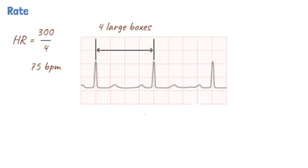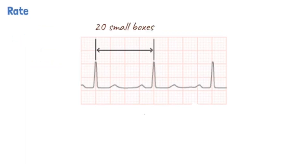Alternatively, we can count the number of small squares between each consecutive R wave and then divide 1500 by this number. For example, in the ECG shown, the heart rate is 1500 divided by 20, which gives 75 beats per minute.